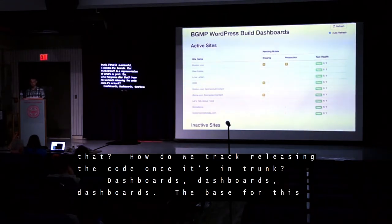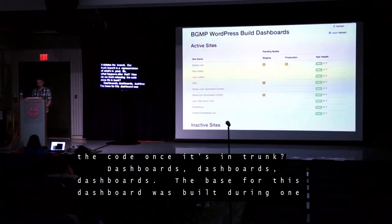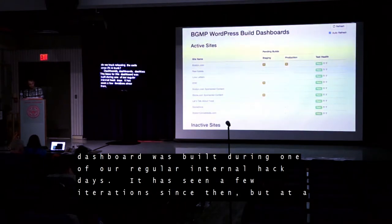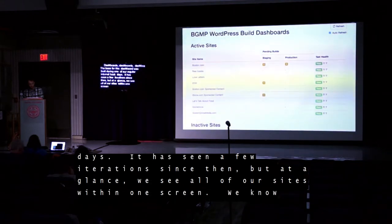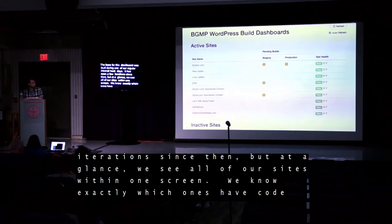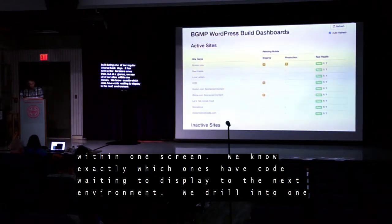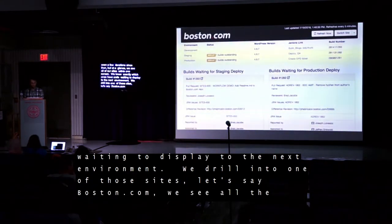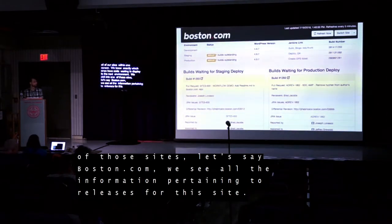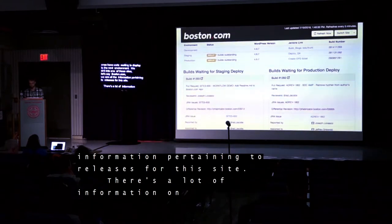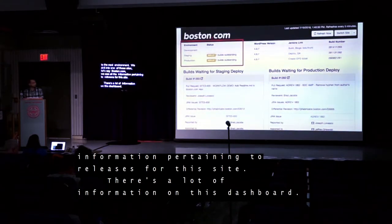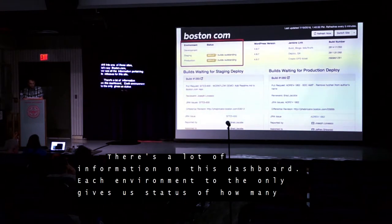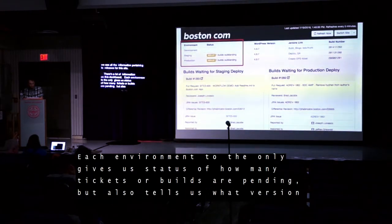The dashboard has seen a few iterations, but at a glance we see all of our sites within one screen and know exactly which ones have code waiting to deploy to the next environment. If we drill into one of those sites — let's say boston.com — we see all the information pertaining to releases for that site. Each environment not only gives us a status of how many tickets or builds are pending, but also tells us what version of WordPress the environment is running.